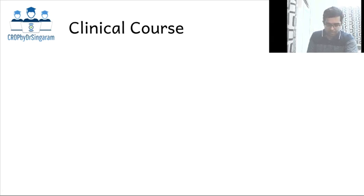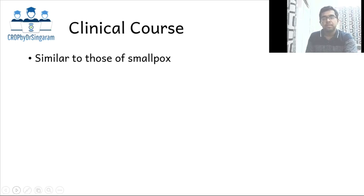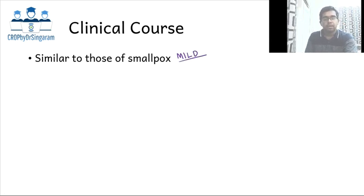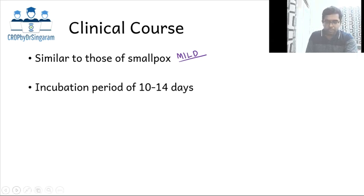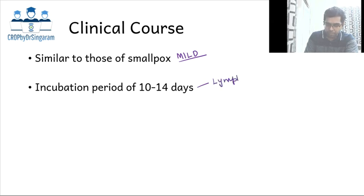Coming to the clinical course of the disease, it follows a clinical course similar to that of smallpox, even though it is a milder form of the disease. However, there are certain characteristic differences between smallpox and monkeypox which will be highlighted further. The incubation period is around 10 to 14 days, and during this incubation period, the virus primarily replicates in the lymphoid tissue — an important point to note.